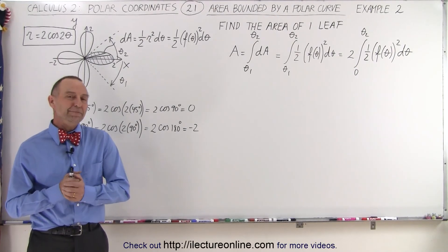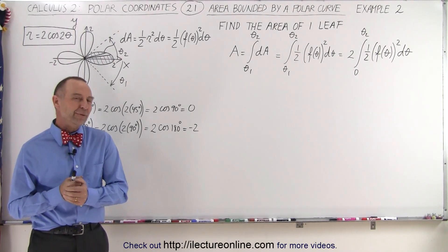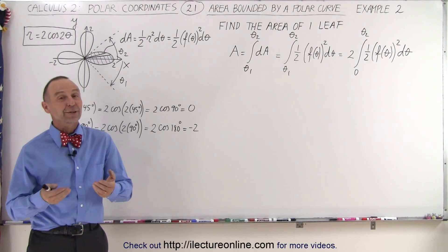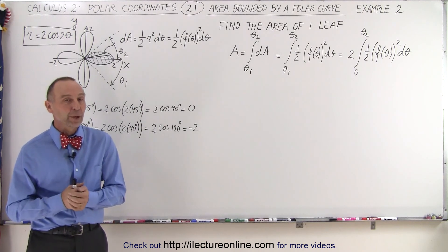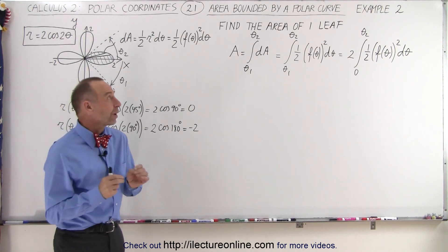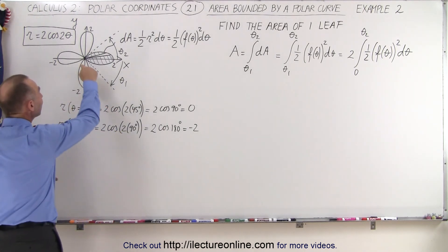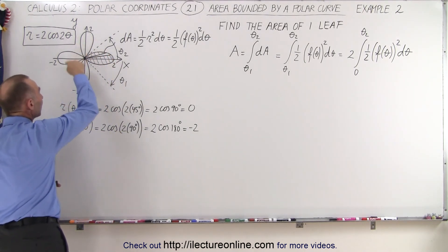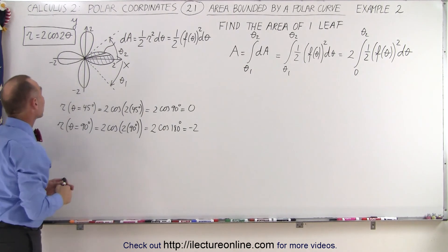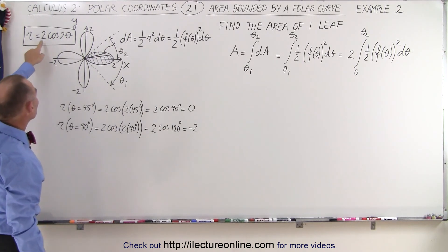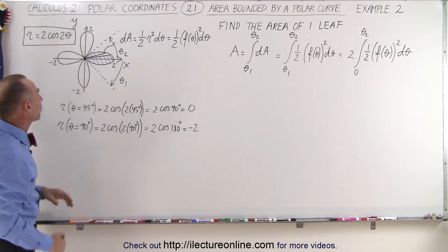Welcome to our lecture online. Now for an example that's a little bit more difficult than the previous one. We're going to try to find the area of one leaf of this function, defined by r equals 2 times the cosine of 2 theta.